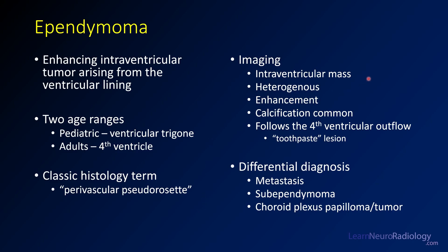On imaging, these patients tend to have intraventricular masses that are heterogeneous with avid enhancement, and calcification is common. When seen in the fourth ventricle, they tend to follow the fourth ventricular outflow tract — which is why they're referred to as 'toothpaste lesions,' because like toothpaste they're squeezing through the outflow tracts. The differential for intraventricular lesions includes metastasis, subependymoma if less enhancing, choroid plexus papillomas, and medulloblastoma or cerebellar tumors if you can't confirm the intraventricular location.